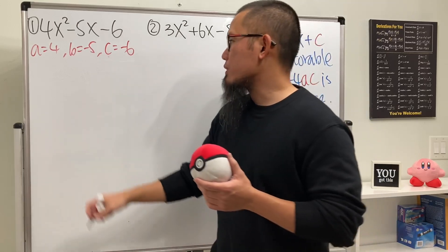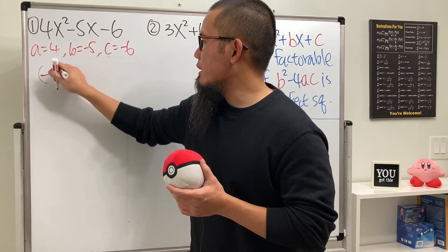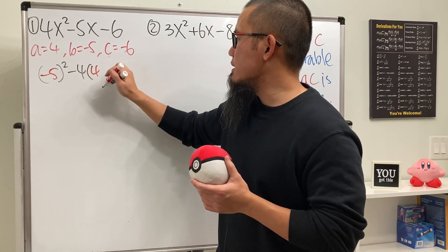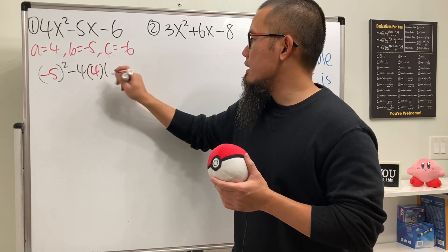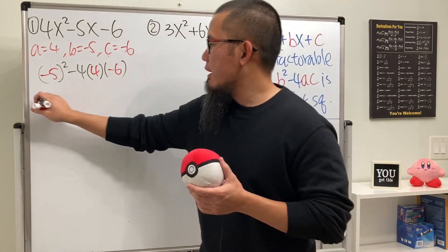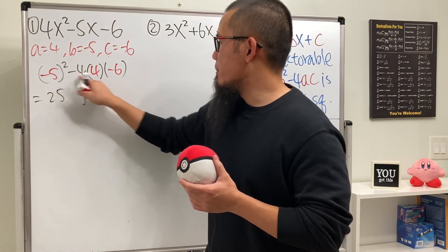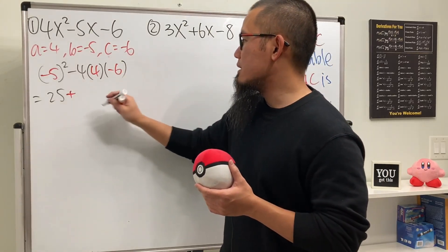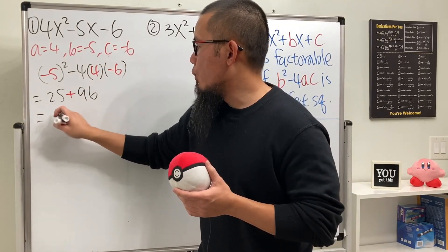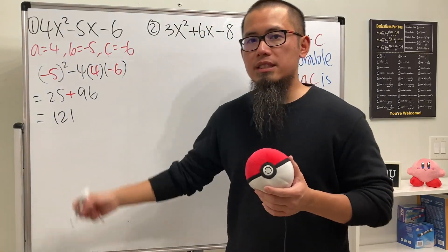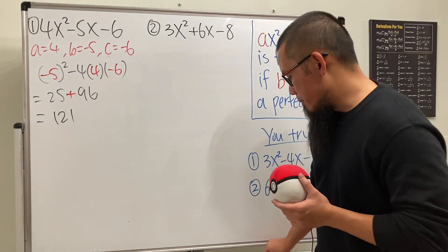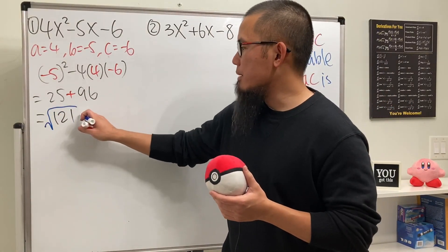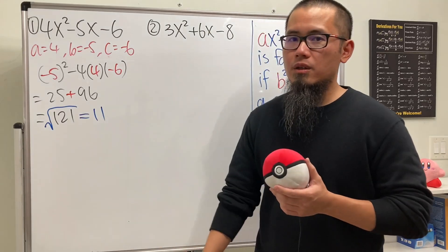And of course, work out b. So negative 5, and we square that, and then minus 4ac. And a is 4, and c is negative 6. This is 25, and then minus minus becomes plus, and then 16 times 6 is 96. And altogether we get 121. Is this a perfect square? What do we mean by perfect square? That means if you take the square root, what do we get? We get a nice number, 11, right?